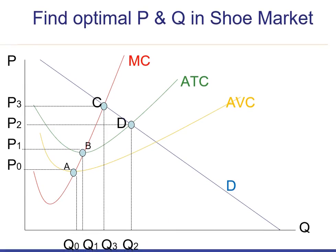We have different prices and quantities that correspond to these different intersection points of the cost curves: MC, ATC, AVC, and demand. The question is, where's the best point to be? Where would you like to be if you could choose any of these points?